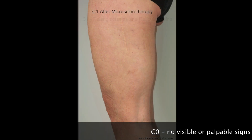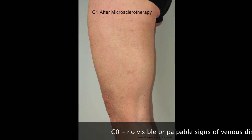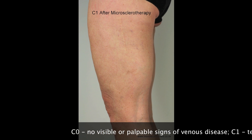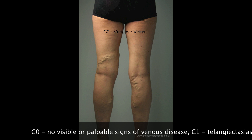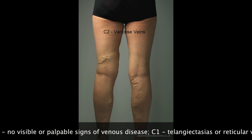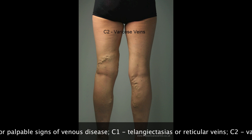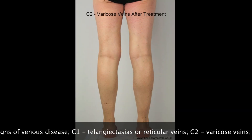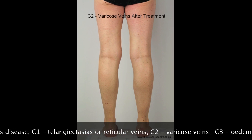C1 disease is the presence of telangiectasia and reticular veins, that are best treated by microsclerotherapy. C2 disease is the presence of lumpy varicose veins, and these are caused by superficial vein reflux. Treating the reflux deals with the varicose veins and the associated symptoms.